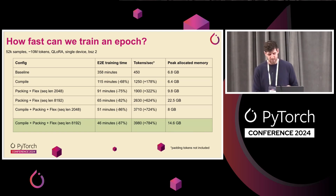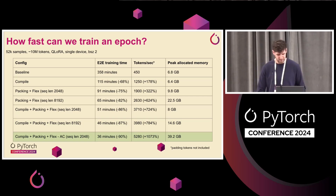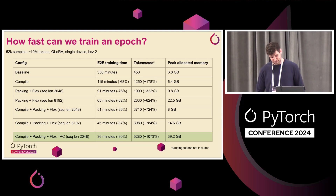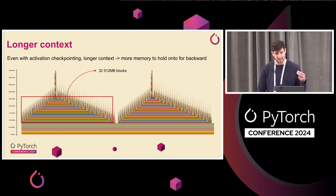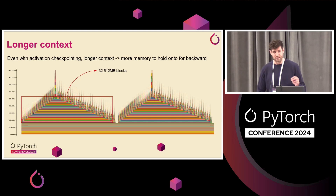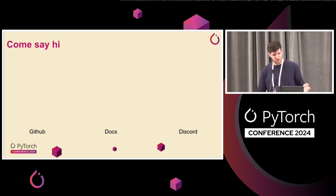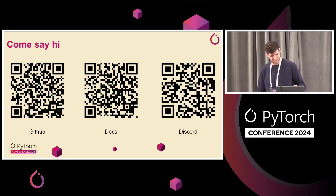We're still under 16 gigs, so let's say we have a beefier GPU and turn off activation checkpointing. Now we can train the whole epoch in 36 minutes at over 5,000 tokens per second, and we still come in under 40 gigs. The rest of the talk is focused on longer context — there are other techniques for longer context length, like offloading the activations and doing it in a separate stream, which is great work by Jane from PyTorch who's giving a talk tomorrow. I'll skip over that and go straight to QR codes if anyone is interested. Thank you.